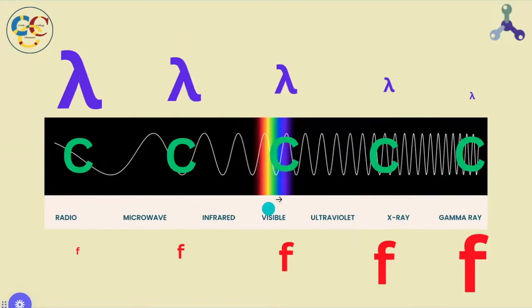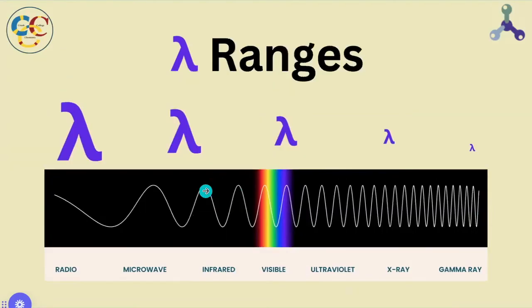C stays the same no matter what category of light, radio, visible, etc. that we're on. Let's make sure we understand the wavelength ranges that bound each type of wave.